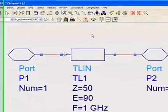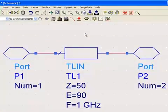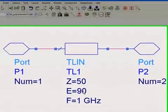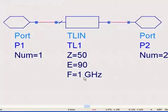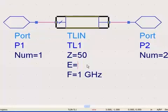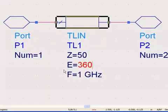But you specify the delay the way a microwave engineer would think about it, which is an electrical length — a phase difference in degrees at a certain frequency, in this case in gigahertz. But for most SI people it's more intuitive to specify the delay in seconds. So you can do this rather easily — I'll show you how to customize this and make it into a component where you specify the delay in seconds.